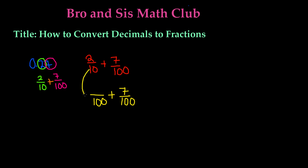We know that 10 multiplied by 10 gives us 100. So 2 multiplied by 10 gives us 20. The reason we multiply 2 by 10 is because whatever you do to the denominator, you must also do to the numerator. So it will become 20 over 100.